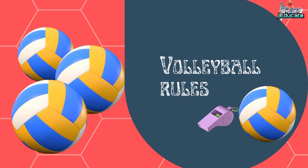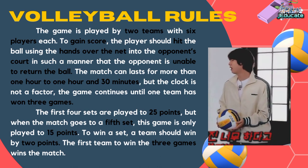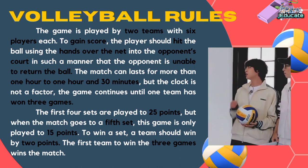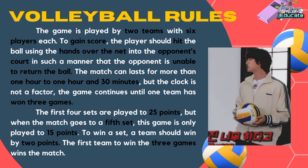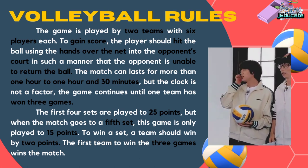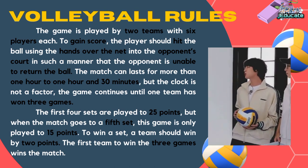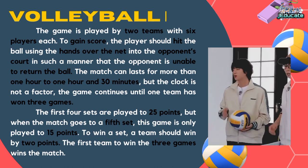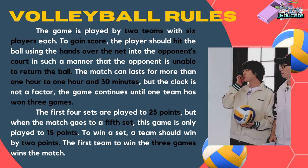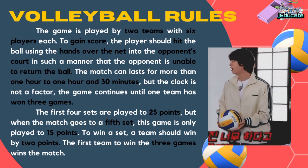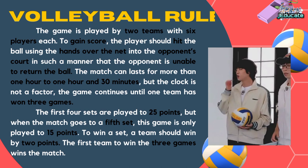Volleyball Rules. The game is played by two teams with six players each. To gain a score, the player should hit the ball using the hands over the net into the opponent's court in such a manner that the opponent is unable to return the ball. The match can last more than one hour to one hour and 30 minutes, but the clock is not a factor. The game continues until one team has won three games. The first four sets are played to 25 points, but when the match goes to a fifth set, this game is only played to 15 points. To win a set, a team should win by two points. The first team to win three games wins the match.